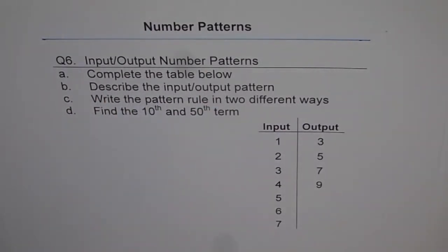Part B: Describe the Input-Output Pattern. Part C: Write the Pattern Rule in two different ways. Part D: Find the 10th and 50th term.